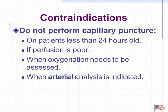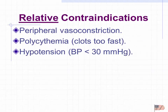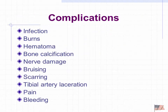Don't perform capillary puncture on patients less than 24 hours old, or when perfusion is poor. If you need to assess oxygenation, use a pulse oximeter — that's your better option. Or if you need a true arterial value, get an arterial sample. Other relative contraindications include peripheral vasoconstriction secondary to cold stress, presence of polycythemia because it potentiates clotting, or very low blood pressure. Complications are similar to those of arterial samples.